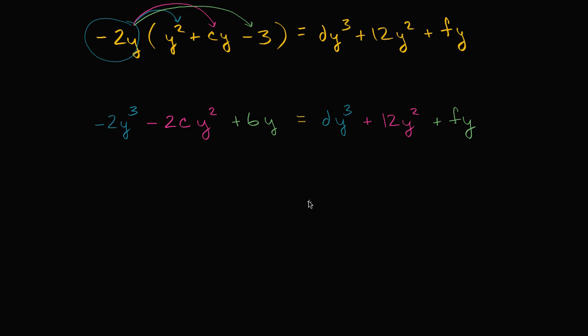And when you see it like that, you see which terms match up, which terms match up to which other terms. So we could see that, look, I have the third degree term here. That has to match up to this third degree term there. So d needs to be equal to negative two.